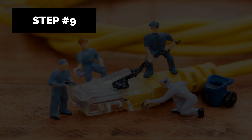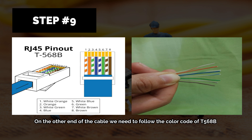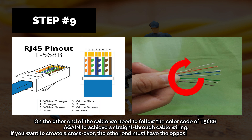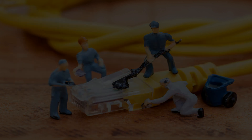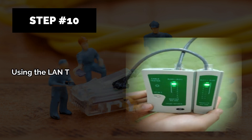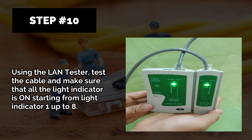Step nine: on the other end of the cable, follow the color code of T568B again to achieve a straight-through cable. In case you want to create a crossover cable, the other end must follow the opposite color code, which is T568A. Step ten: using the LAN tester, test the cable and make sure that all the light indicators are on, starting from indicator one up to eight.